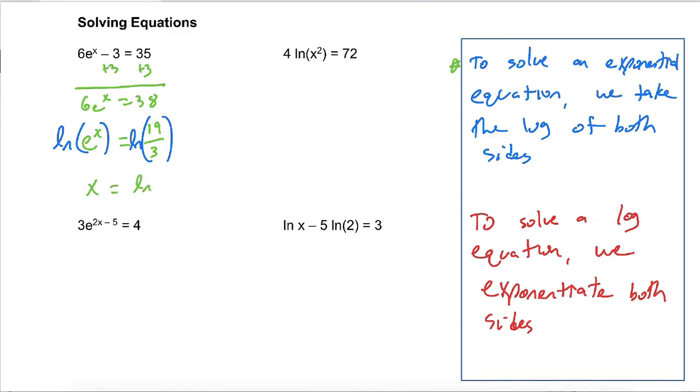And what we're left with is ln of 19 over 3, which if you wanted to say it's simplified, we would take that quotient and write it as a difference, ln of 19 minus ln of 3, and that would be my solution. It's an exponential, so I don't have to worry about domain restrictions. And that's my answer.